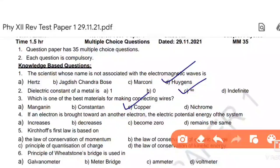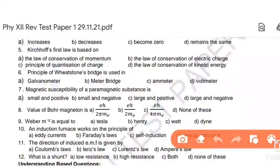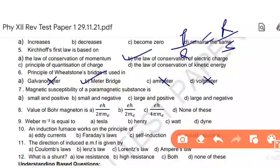Next, the electron is brought towards another electron. Next time, Kirchhoff's law is based on Kirchhoff's first law, that is law of conservation of electric charge. Principle of Wheatstone bridge is used in principle of Wheatstone bridge - P over Q equals R over S. Magnetic susceptibility of a paramagnetic substance. Susceptibility of diamagnetic is negative and paramagnetic is positive. Positive but small. Small and positive.